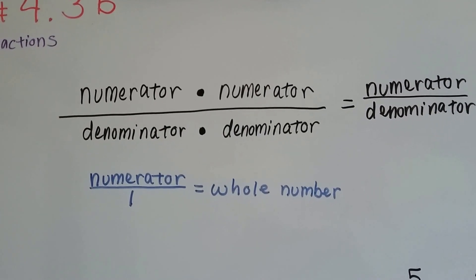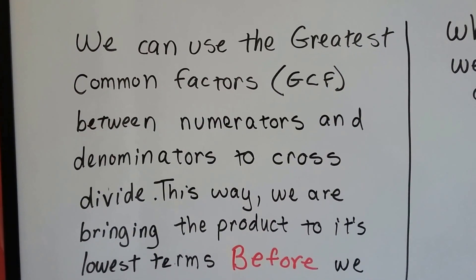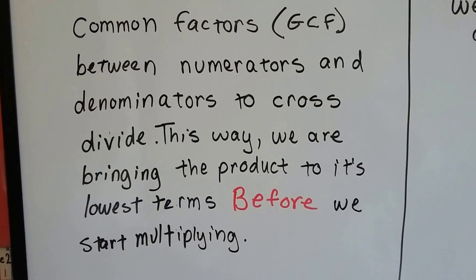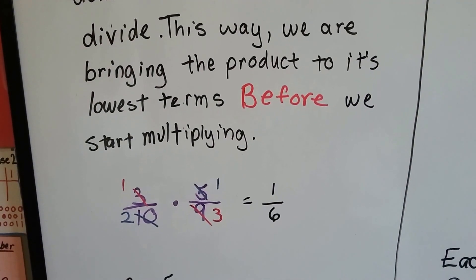We can use the greatest common factors, the GCF, between numerators and denominators to cross divide. This way we're bringing the product to its lowest terms before we even start multiplying.